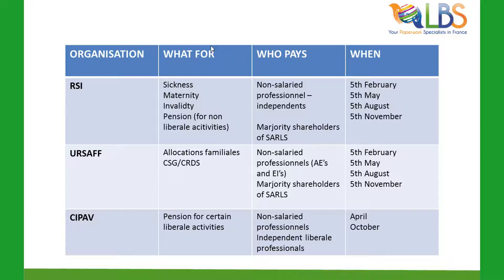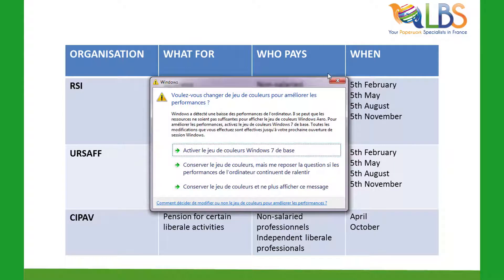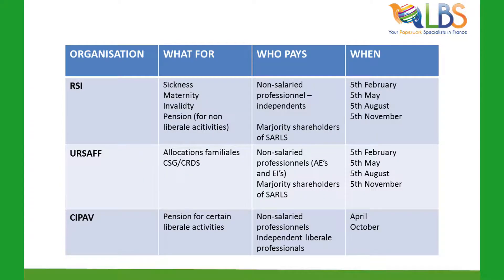Let's quickly take a look at the RSI. What are you paying for? For the majority, it's sickness, maternity, invalidity, and pension. Who pays? Non-salaried professionals — independents, as you are often known. When do you pay? The 5th of February, May, August, and November. From the RSI you will receive a yearly breakdown at the beginning of the year showing how much you have to pay, and then they will send you a reminder for your February, May, and August payments.